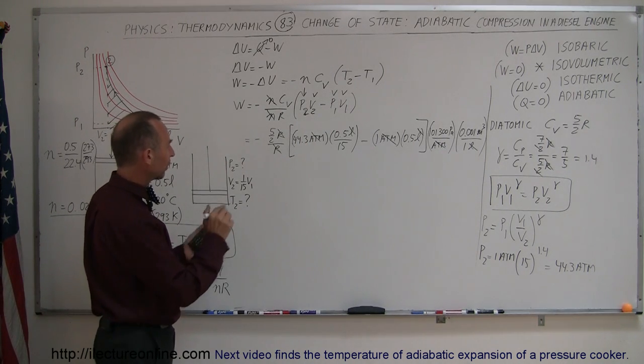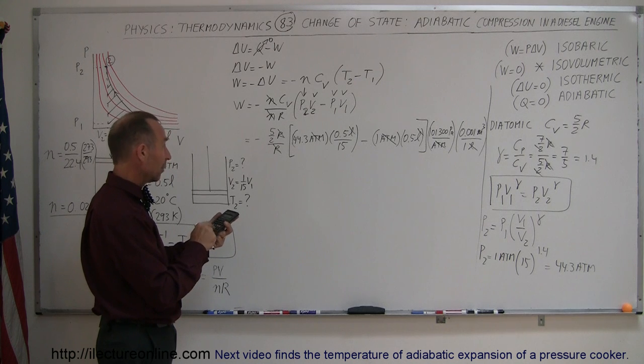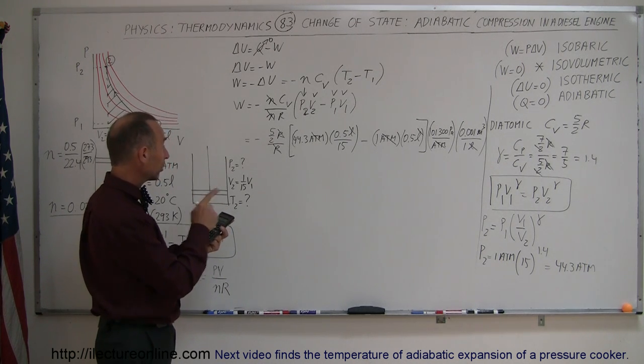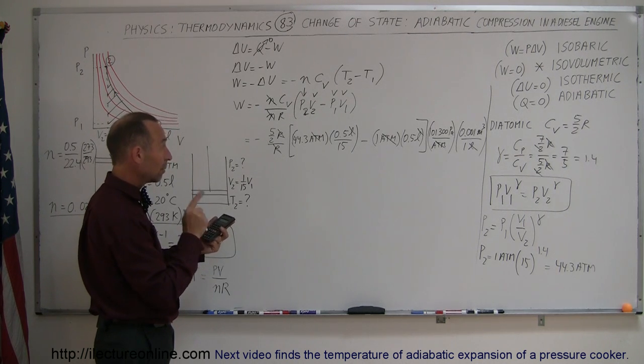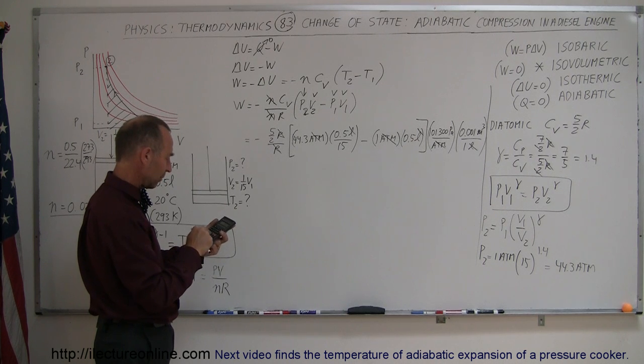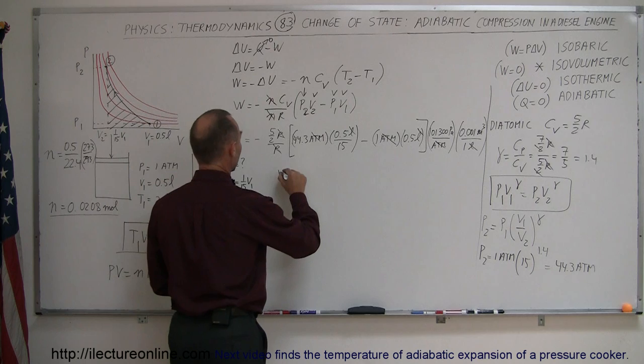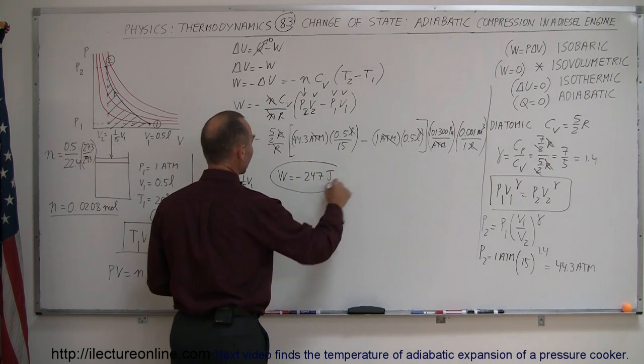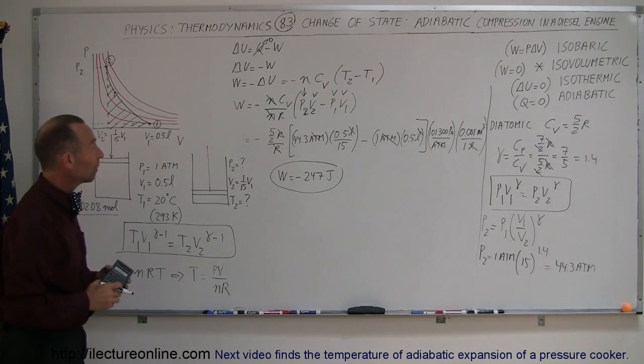Starting with 44.3 times 0.5 divided by 15. We subtract 0.5. We multiply times 2.5. We multiply times 101,300. And we divide by 1,000. The work done equals minus 247 joules, which is the same answer we received before.